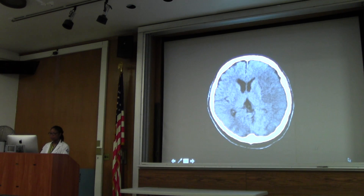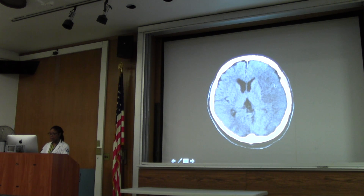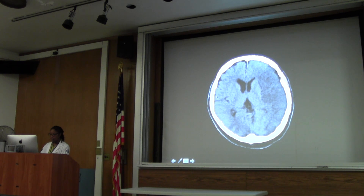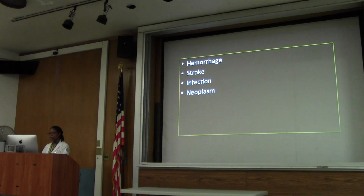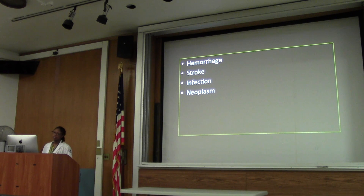This one is quite obvious - this is a large MCA territory stroke. Drop that line down - you've lost the normal grey-white differentiation on this side. This is a large stroke. That's all I have - just a flavor of the common cases we see: hemorrhage, stroke, infection, and neoplasm.